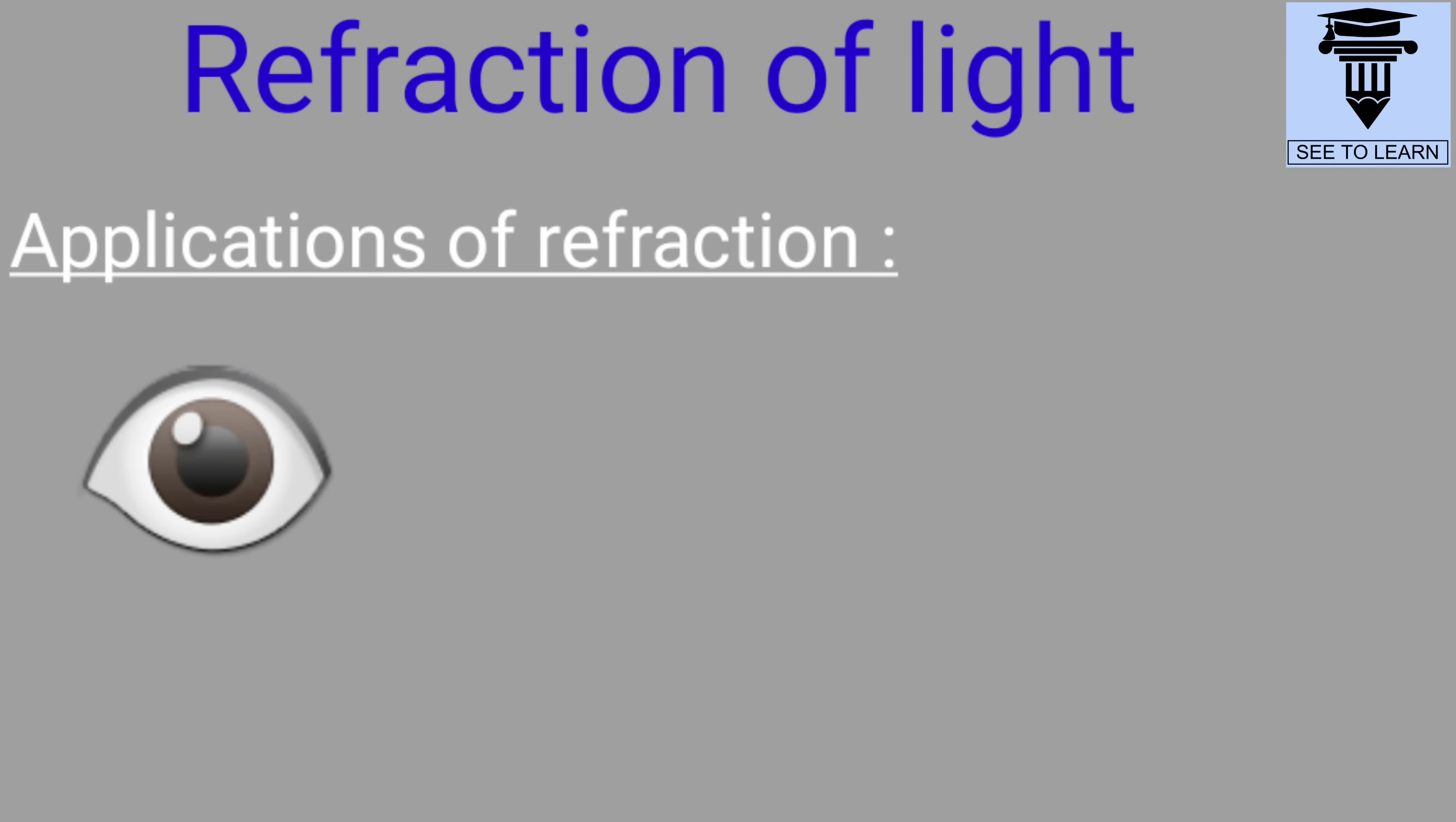Moreover our eye has a lens which refracts light to form a clear image of objects on the retina. As a result we can see those objects clearly.